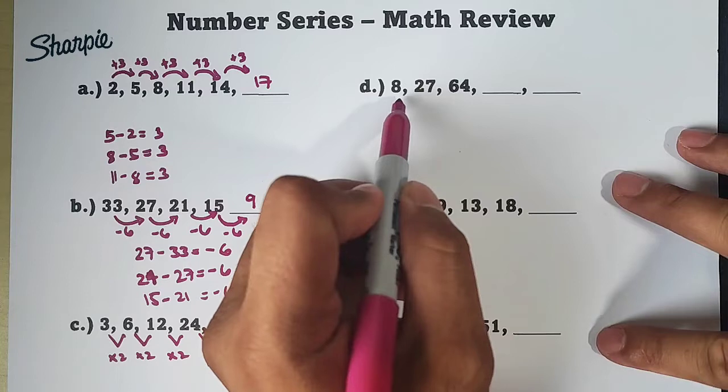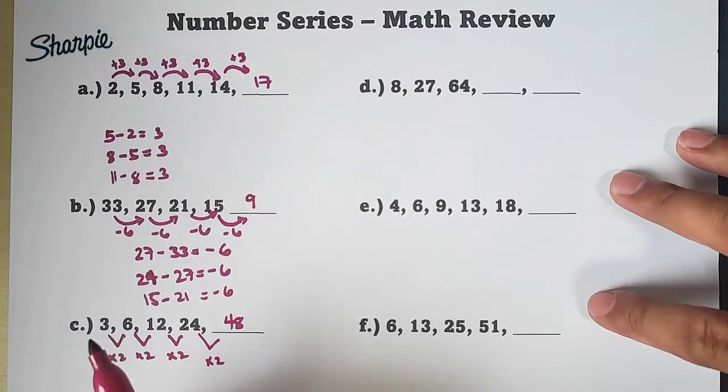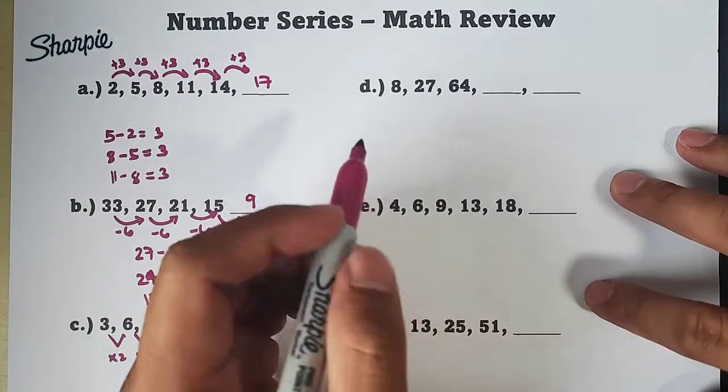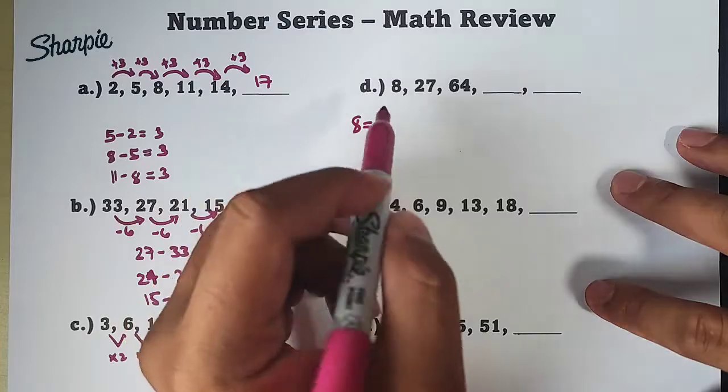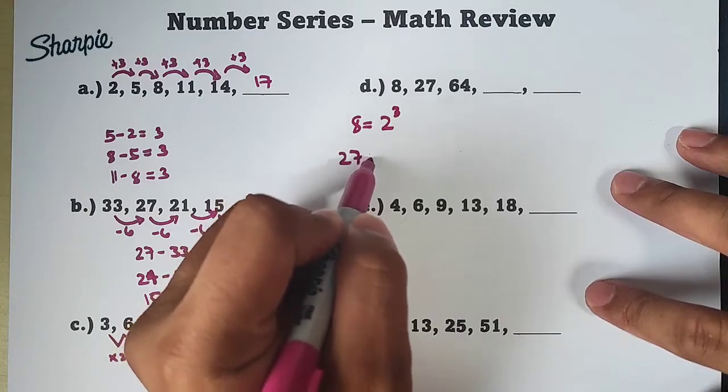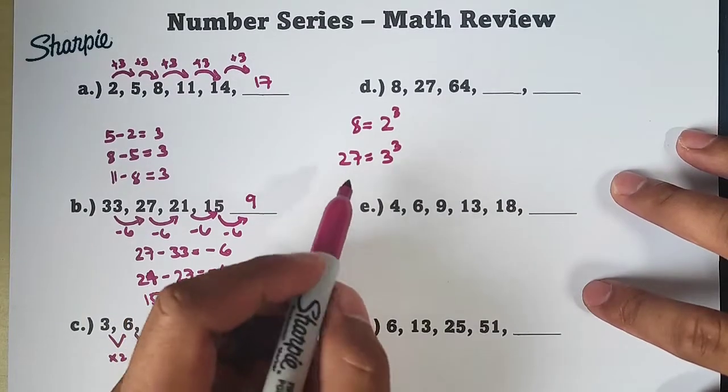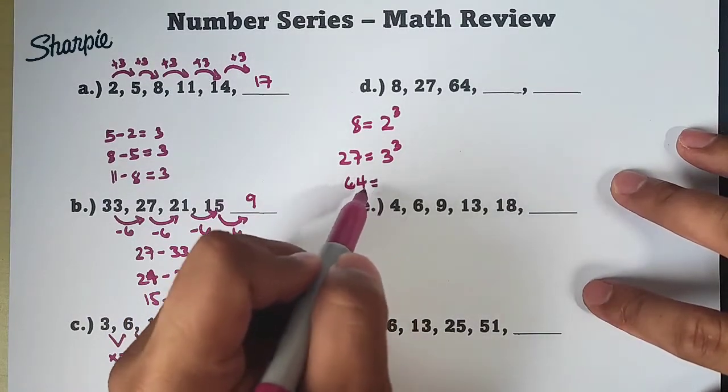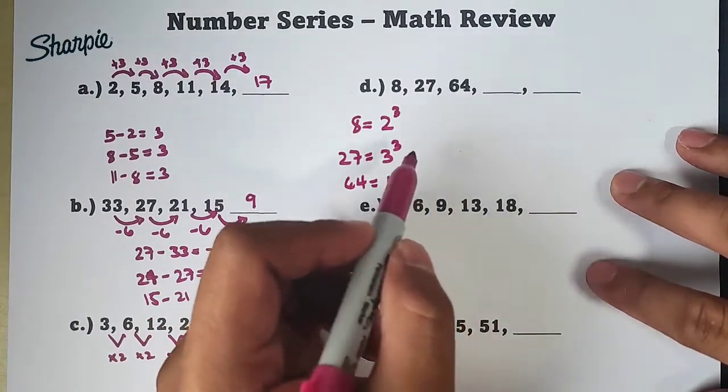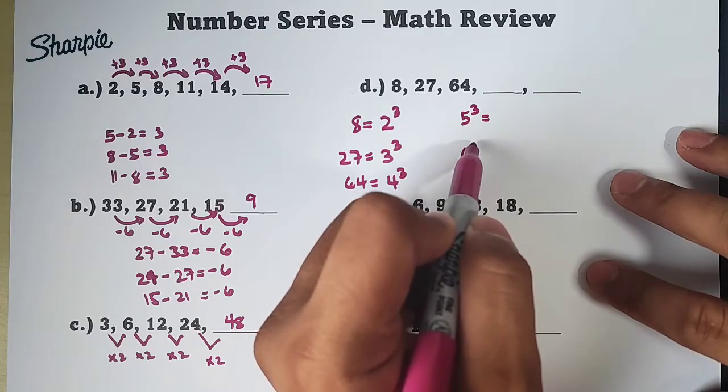With letter D, we have 8, 27, 64. Tapos, dalawa yung hinihingi sa atin dito. Now, itong numbers ito, medyo familiar ako dito. Kasi, itong 8, 27, 64 natin are perfect cubes. Ibig sabihin yan, yung 8 natin is equivalent to 2 cube. Yung 27 natin is equivalent to 3 cube. Yung 64 natin is equivalent to 4 cube. Ano next natin? Ibig sabihin, guys, yung missing number natin is the answer for 5 cube and 6 cube.